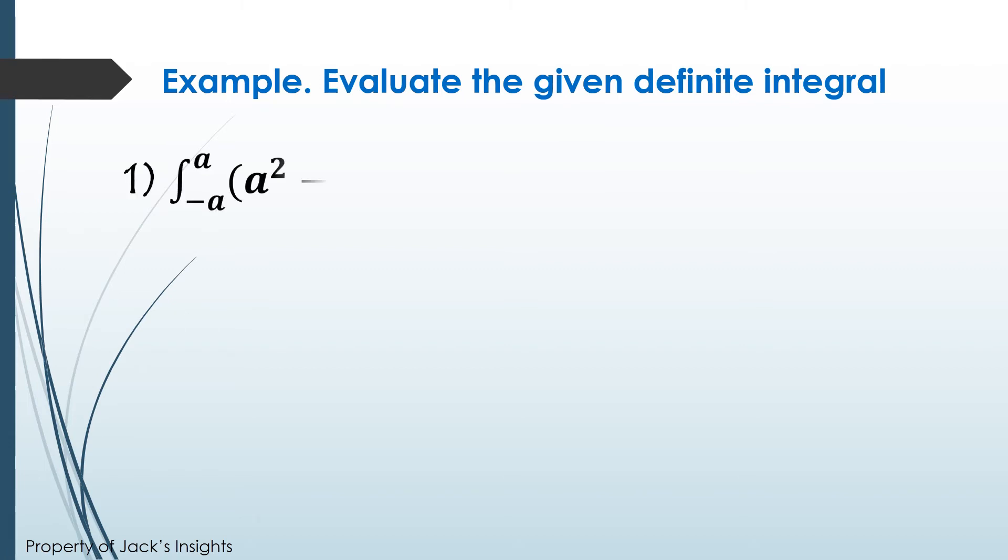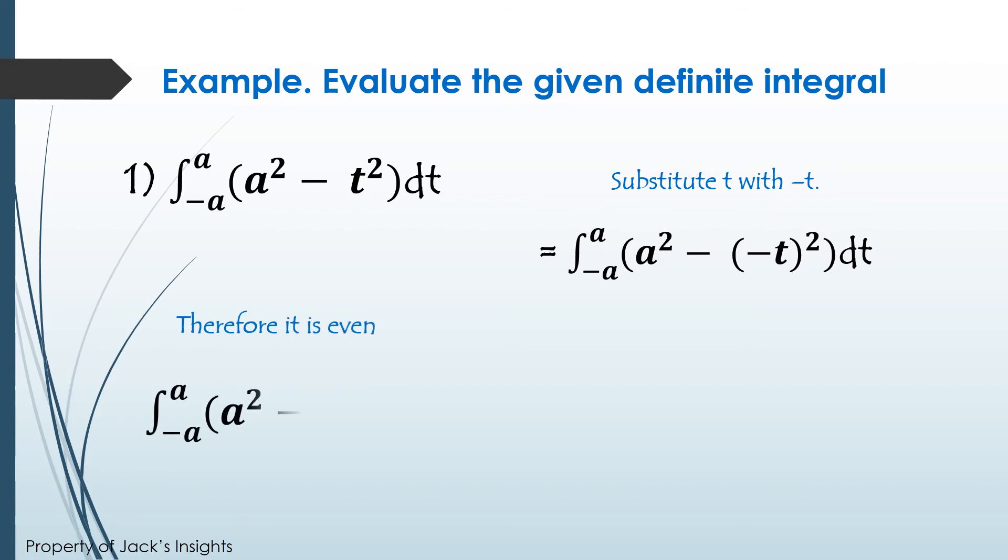For example, evaluate the given definite integral. The integral of the quantity a squared minus t squared dt, with the limits from negative a to a. Let's substitute t with negative t to determine whether the function is even or odd. Since the function doesn't change, therefore it is even.